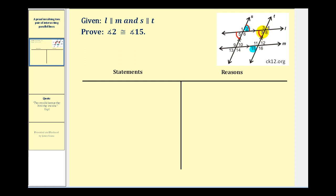Now I think we have the connection we need. Looking at the parallel lines L and M cut by transversal T, angle seven and angle 15 are also corresponding angles and therefore congruent. So it looks like we can use the vertical angle definition, the corresponding angles postulate twice, and then the transitive property to show that angle two and angle 15 are congruent.